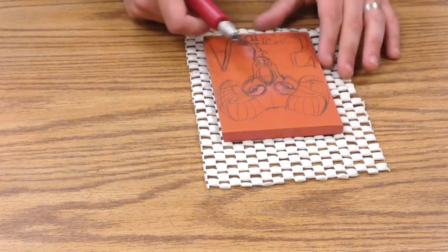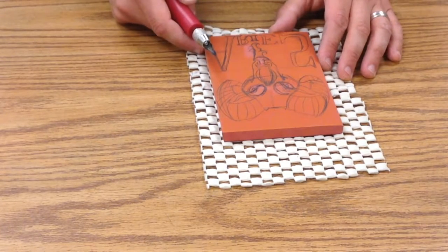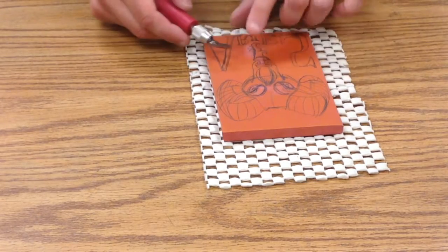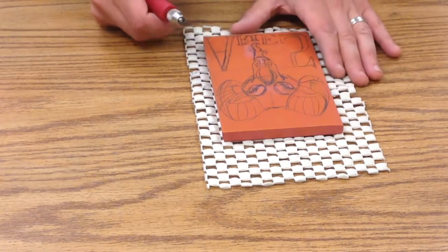It's the number two, and what I'm going to basically be doing is I'm going to be carving away the areas that I want to be white.